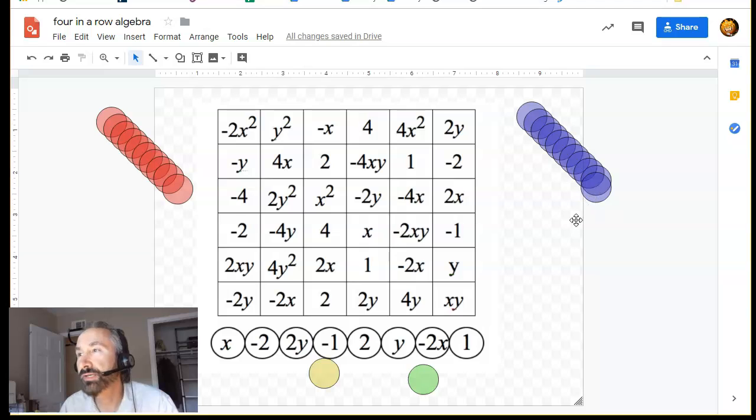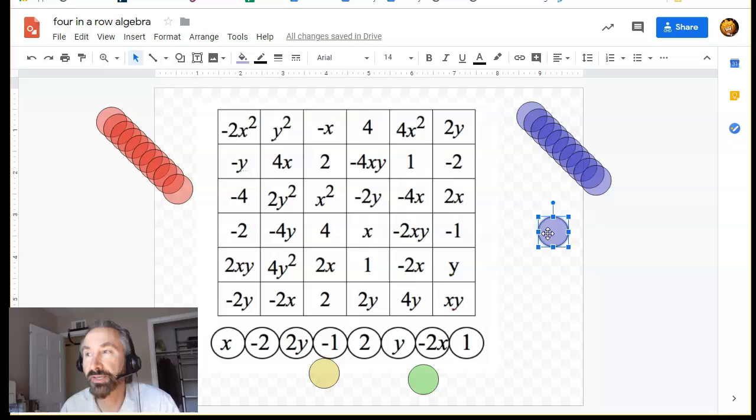So what I did was I figured out a way in Google Drawings to make an object that is transparent. And by doing that, I was able to make these transparent markers that are something like what we used to use in the old days when we had transparencies and overhead projectors.